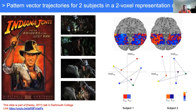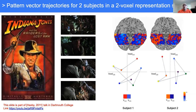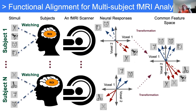Functional alignment works like this: we have two subjects watching the Indiana Jones movie, and we trace voxel values over time. These arrows show the change of voxels across time. We can see that the patterns are actually the same, but they have some rotation. So for multi-subject study, we try to transfer all of these neural activities to a common space such that similar categories of stimuli will be located in the same place. This functional alignment is a major part of my PhD study, and I've published several papers on how we can align neural activity.